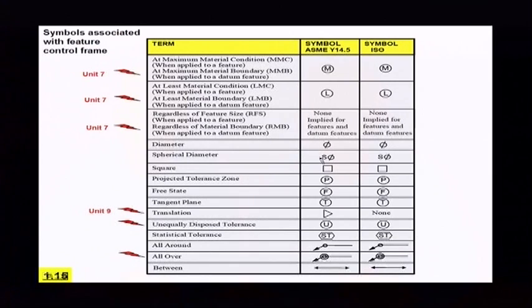Going down, the rest of the symbols are pretty much the same. You can recognize them. And what's new here also is the translation symbol. The translation symbol is something that we apply to datum features. It looks something like this. This is going to be covered later on in unit 9.